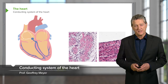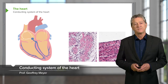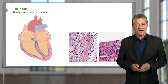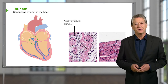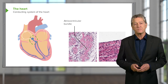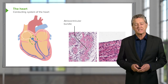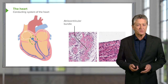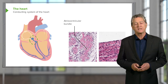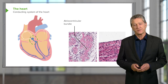Let's look at the conducting system of the heart. The conducting system of the heart consists of the sino-atrial node, the atrio-ventricular node, and then these bundles of conducting fibres, named in various ways, but I don't want to get into those namings in this particular lecture.